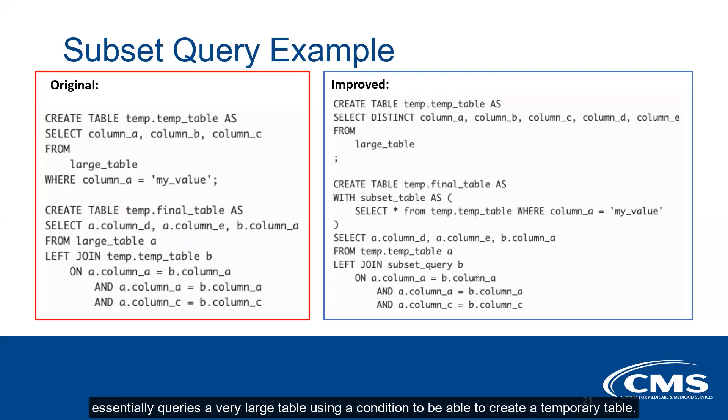The first query essentially queries a very large table using a condition to create a temporary table called temp_table. With that temp table, there's essentially a query against the original large table that joins it with this temporary table to extract all of the matching records and pull out some of the columns that are relevant in the output.